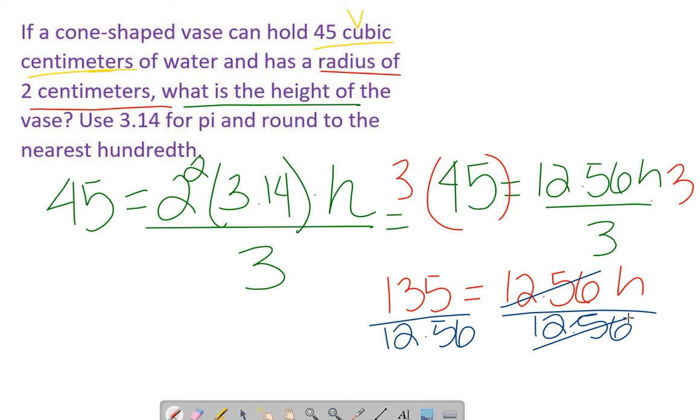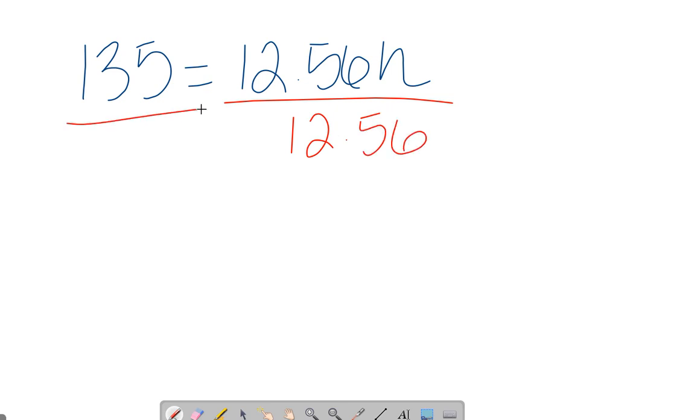Let me add a new board. We had 135 equals 12.56h. We decided to divide by 12.56 because that's the opposite of multiplying by 12.56. We get rid of that on both sides.